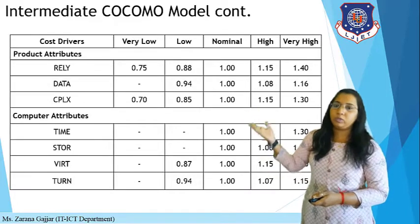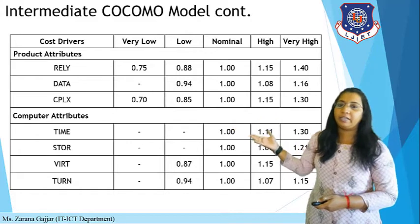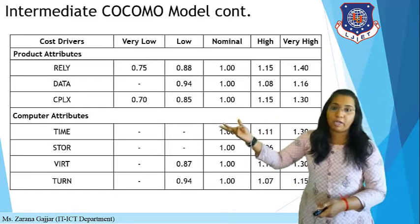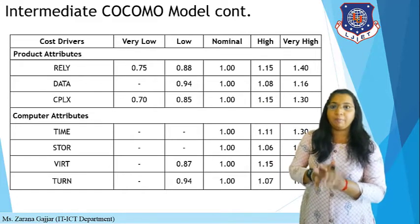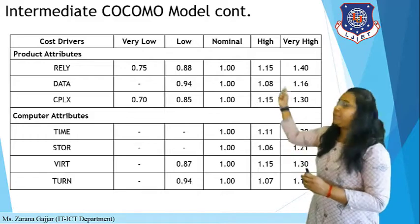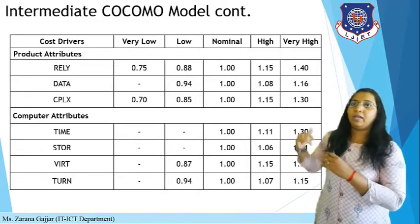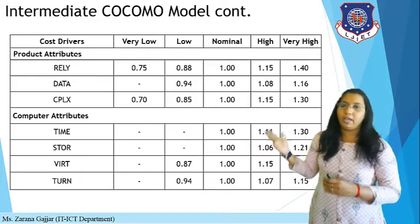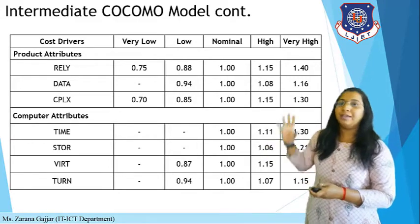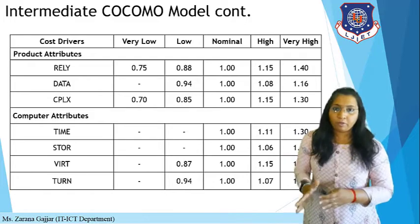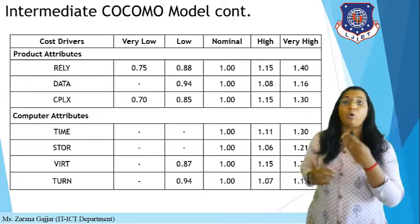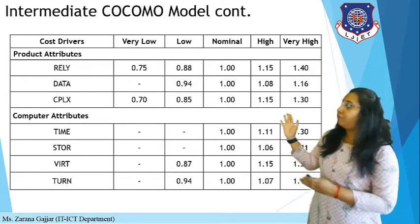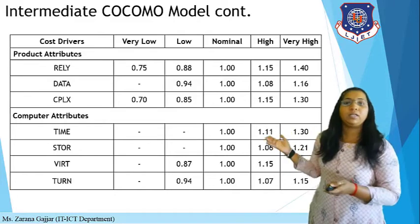All attributes are listed in the table. In product attributes, RELY is for reliability, DATA for database size, and CPLX for complexity — each has different values. For example, if your project reliability is very low, you use 0.75; low is 0.88; nominal is 1; high is 1.15; and very high is 1.40. These predefined values are known as the Effort Adjustment Factor (EAF). You multiply all the relevant factors together to calculate EAF.